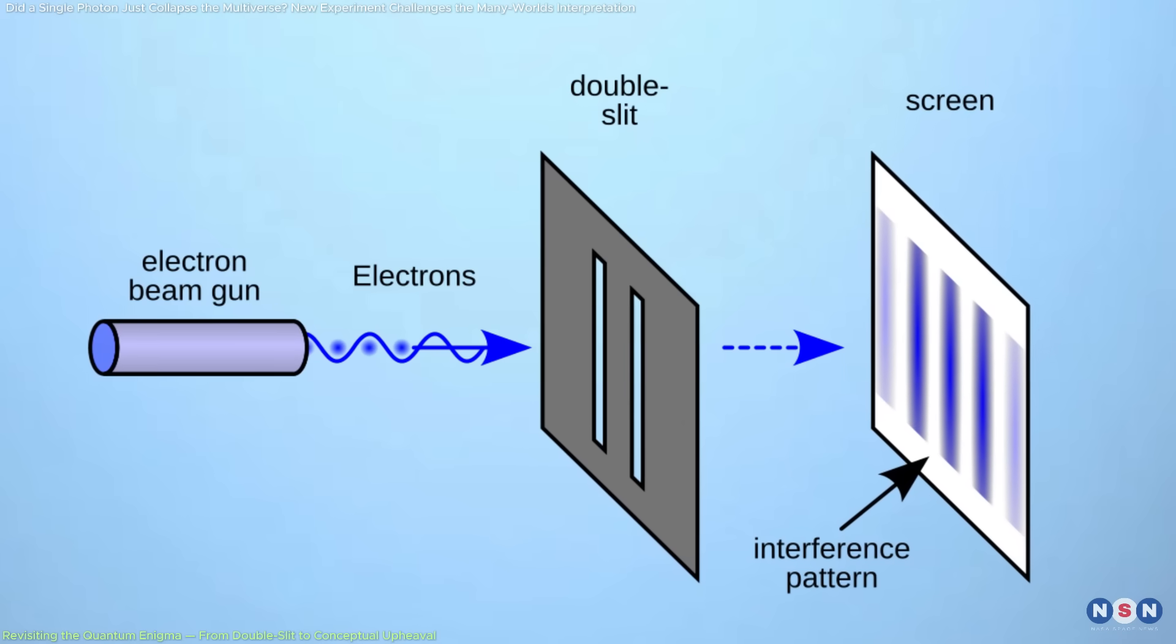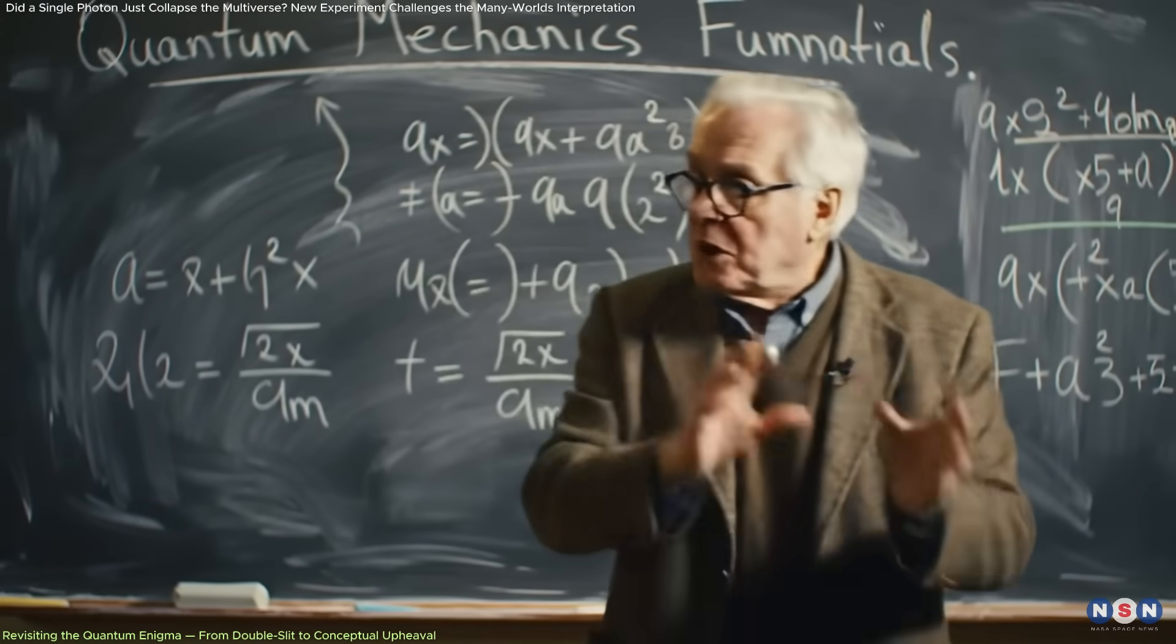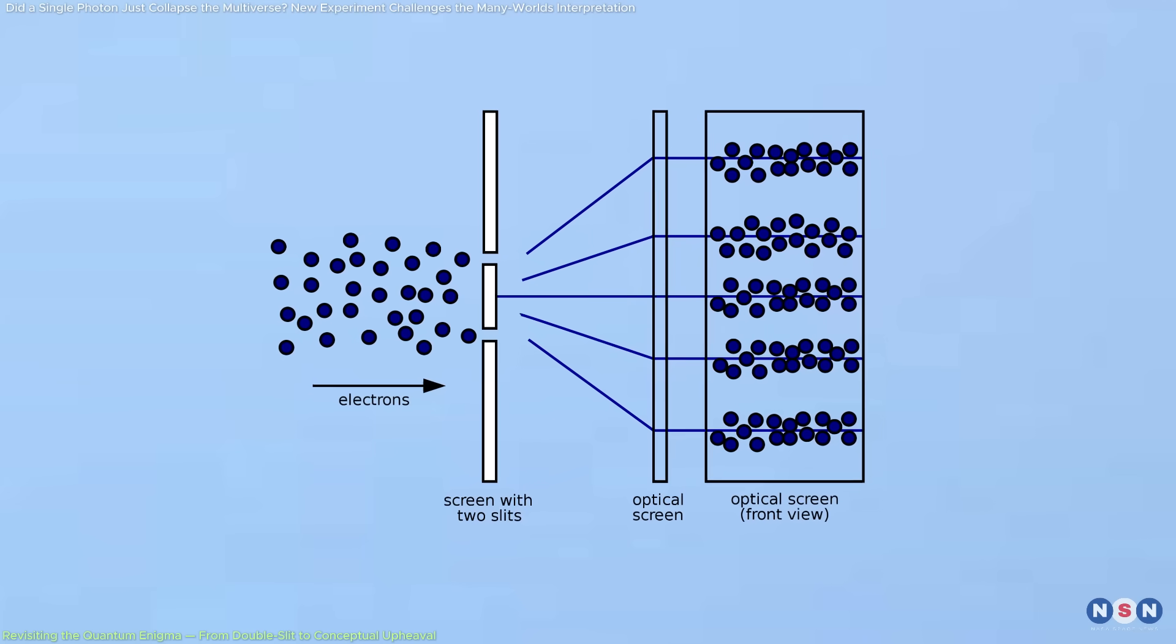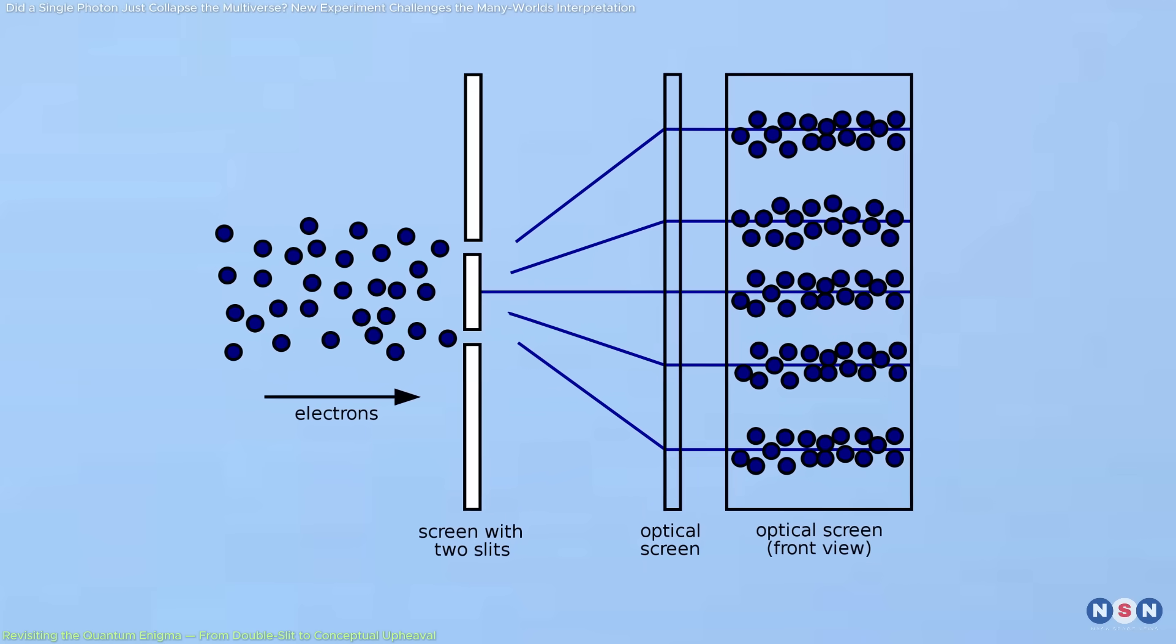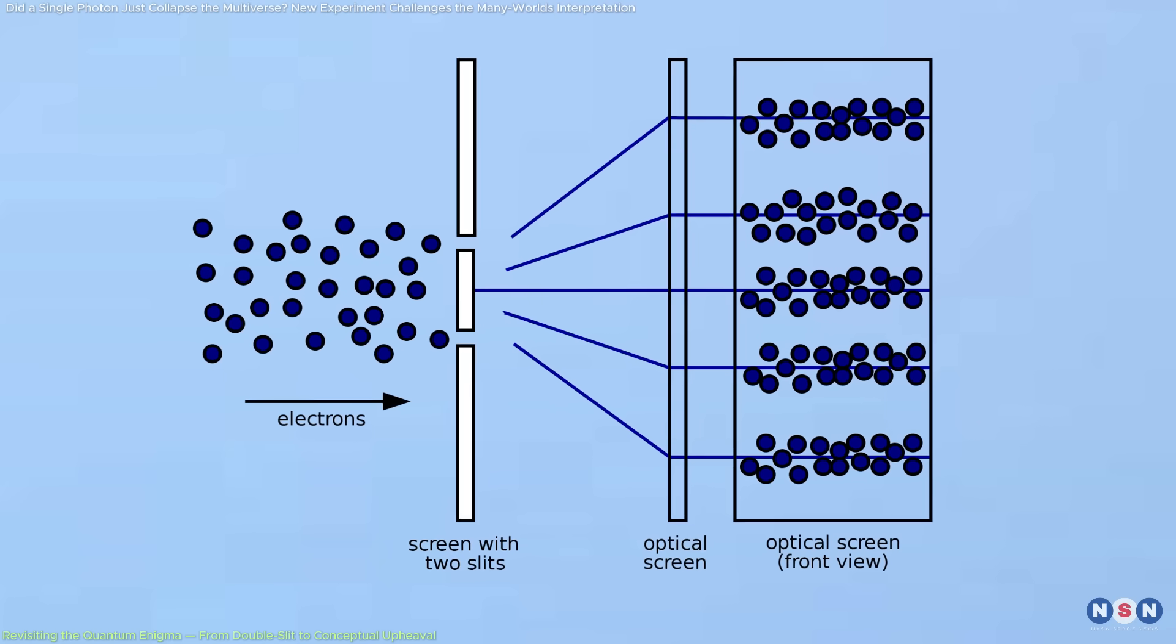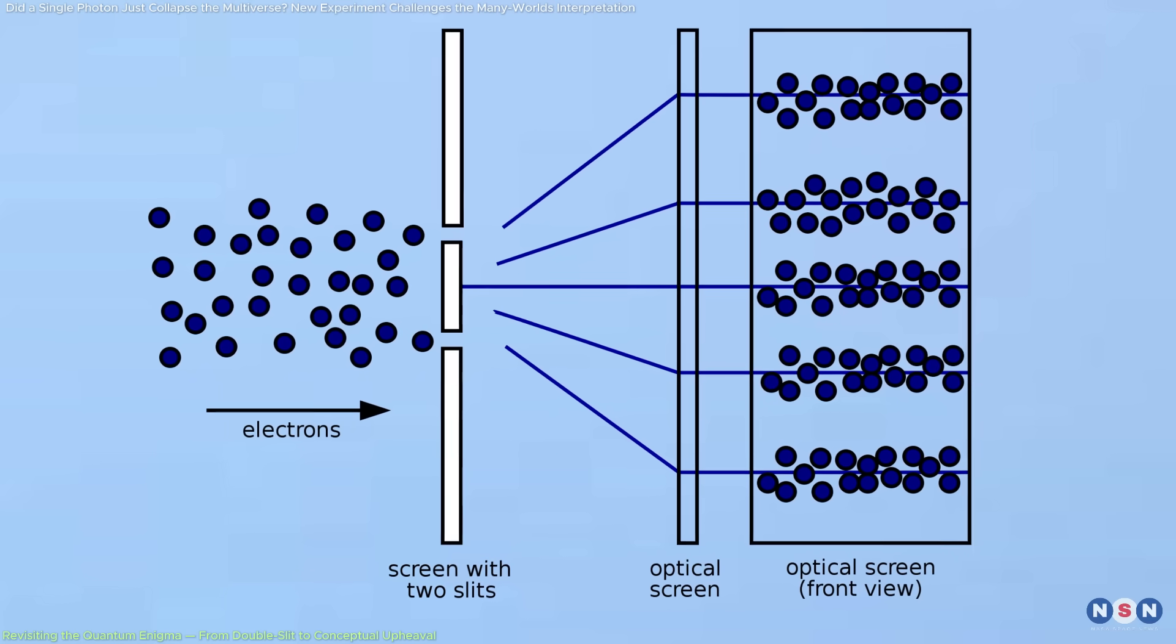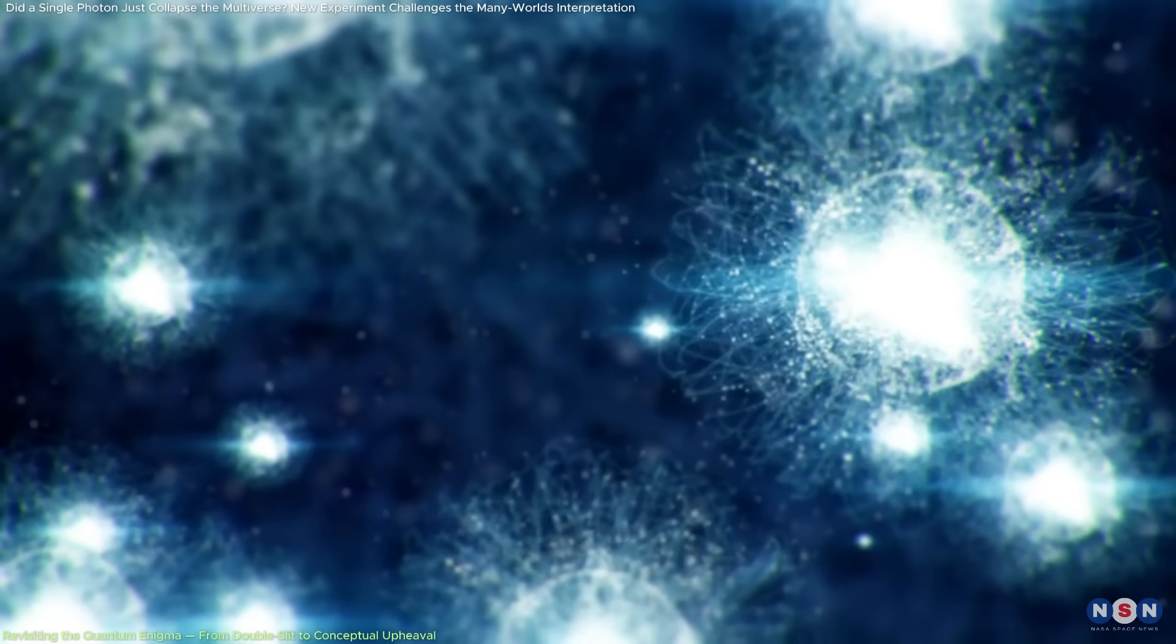The double-slit experiment has remained a cornerstone in demonstrating quantum mechanics' departure from classical expectations. When individual photons are sent toward two open slits without observation, they generate an interference pattern typical of waves. But if a detector monitors which slit the photon passes through, this pattern disappears, and the behavior reverts to that of a classical particle.